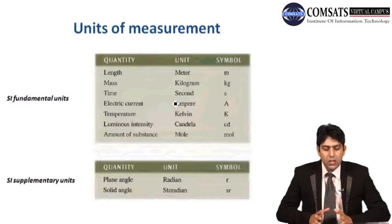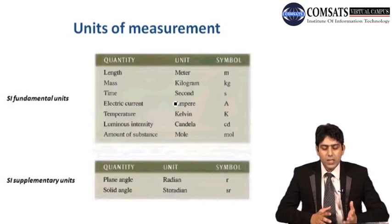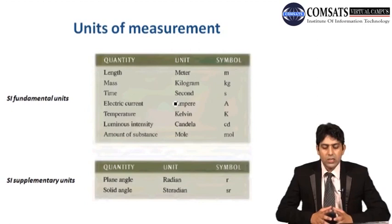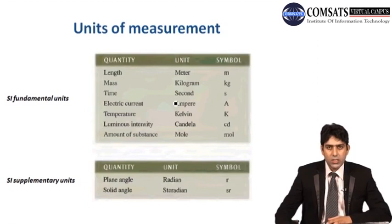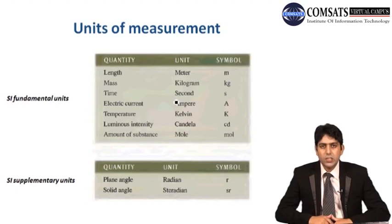Units of measurement: there are seven basic fundamental units, which we call base units. These include length, mass, time, electric current, temperature, luminous intensity, and amount of substance. There are also two supplementary units — plane angle and solid angle — which will not be part of this course. Our main concern is with electric current, whose unit is the ampere, with symbol capital A.